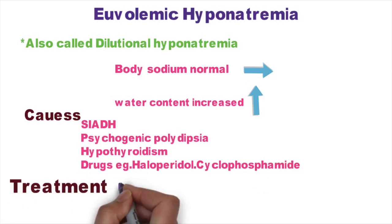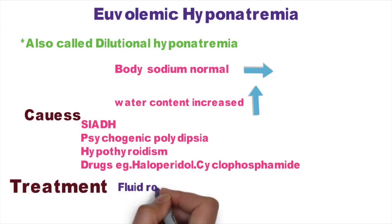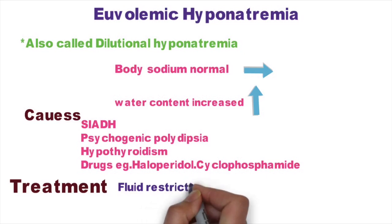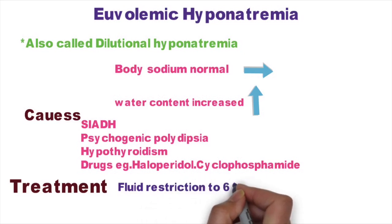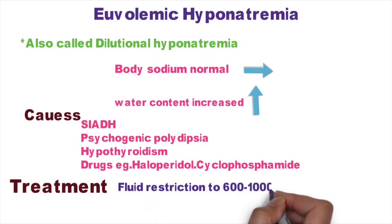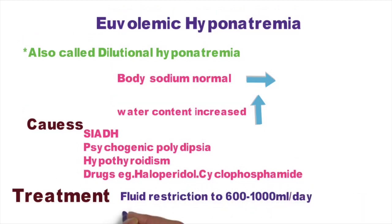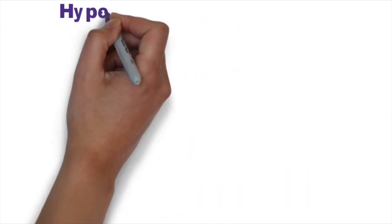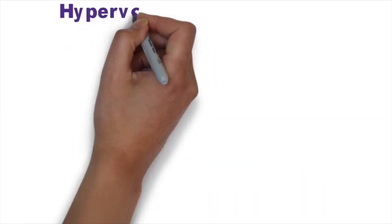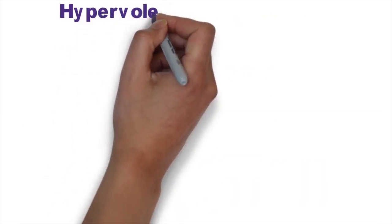Euvolemic or dilutional hyponatremia is treated by fluid restriction in the range of 600 to 1000 ml per day and withdrawal of the precipitating drugs.